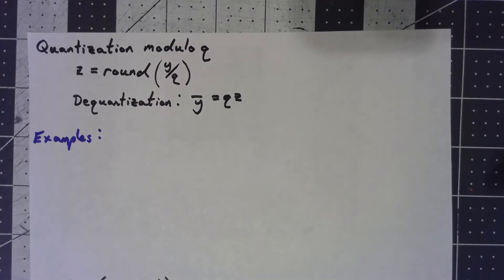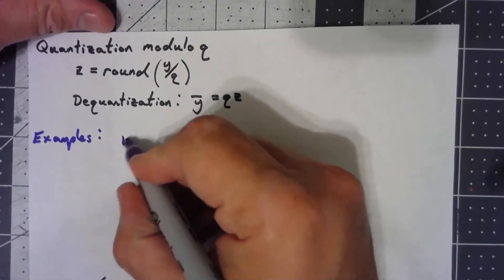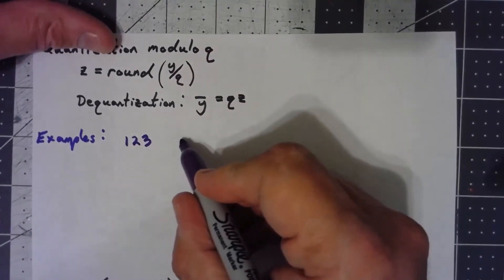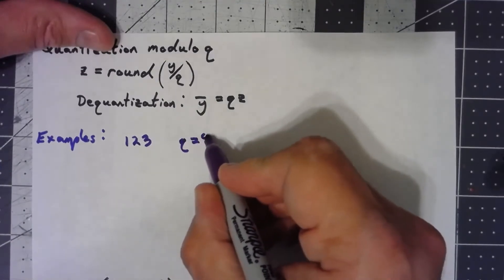So to quantize something we go ahead and we divide by a modulus and then round that thing off. So for example, let's say I wanted to quantize how about 123 and we'll do it with modulo q equals 8.